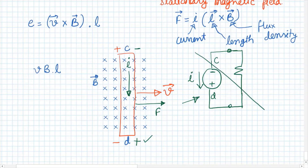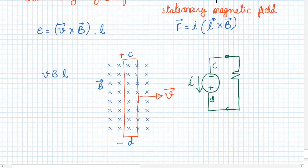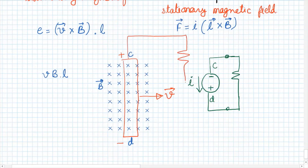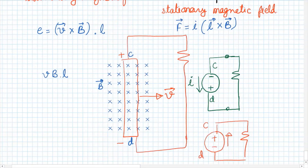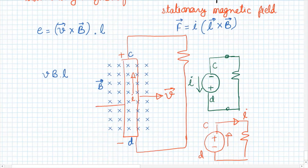The induced EMF cannot have that polarity. Now let us consider another case where C is more positive compared to D, with a resistance connected between C and D. The direction of current will be from D to C inside the source, since current flows from minus to plus inside a source. Because of this current I, there will be a force on the conductor placed in a magnetic field, and the force will be in this direction — opposing the movement of the conductor. Lenz's law says the effect opposes the cause, so this should be the correct polarity of the induced EMF.